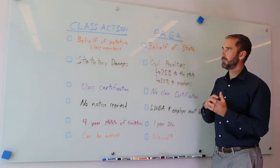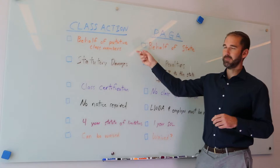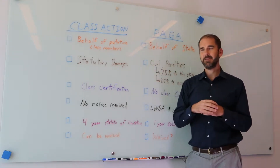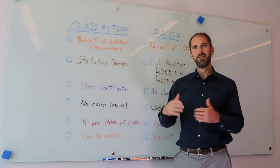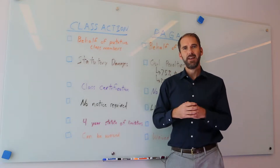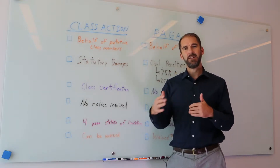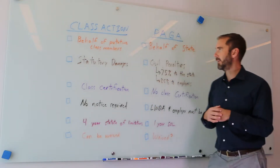First, a class action is brought on behalf of putative class members — other members. The named plaintiff brings the action on behalf of these other unnamed employees that are similarly situated as the named plaintiff.